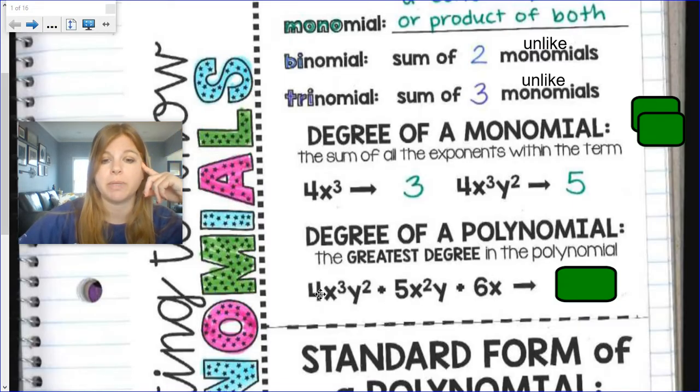Bear with me. So 4x to the third y squared. 3 plus 2 is 5. So this first term has a degree of 5. And we knew it's 5 because we did that problem here.